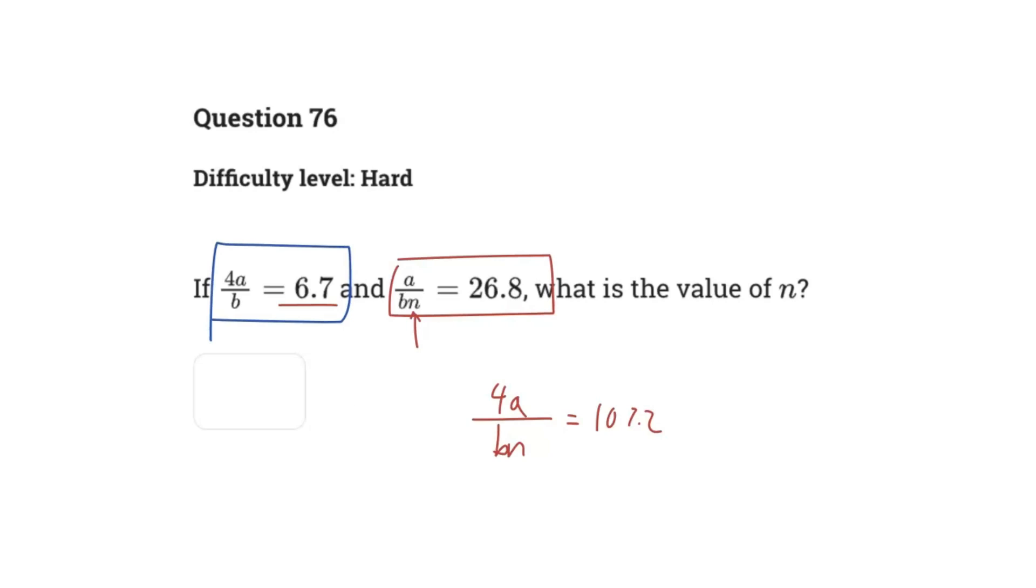We know 4a over b is 6.7, and we have 4a over b in our equation. So this simplifies out to just 6.7 over n.